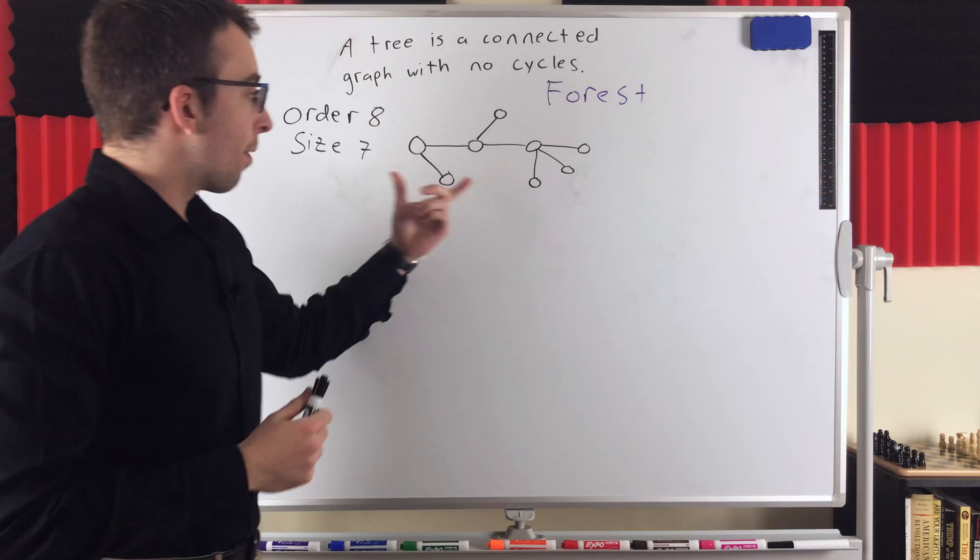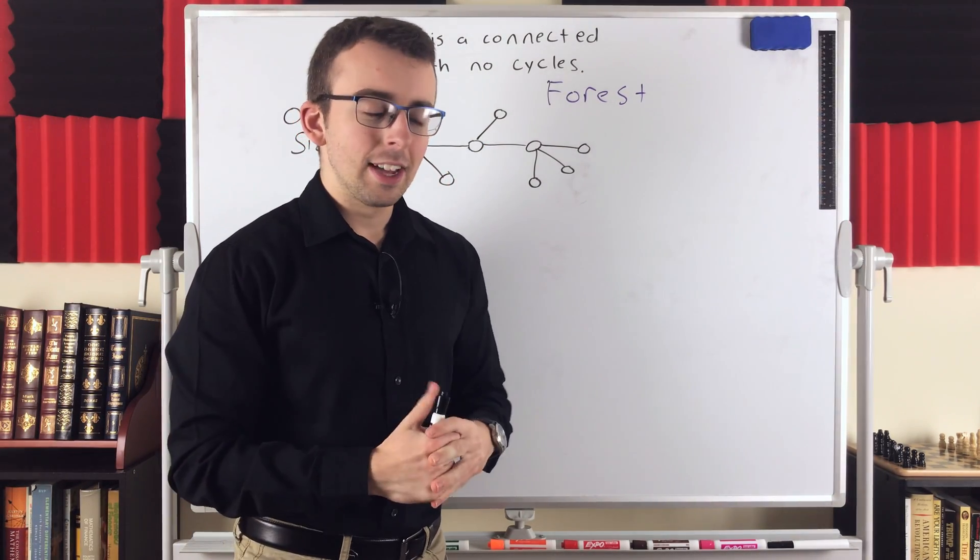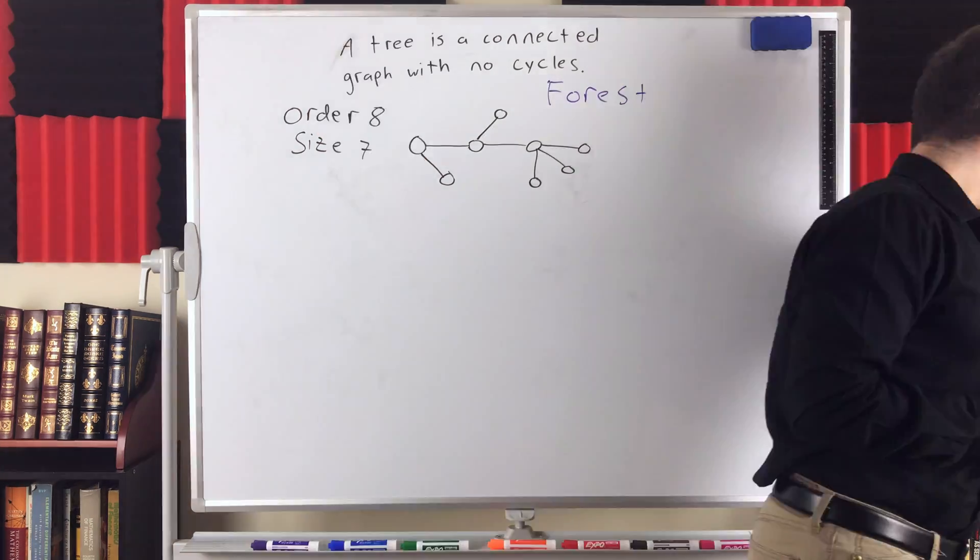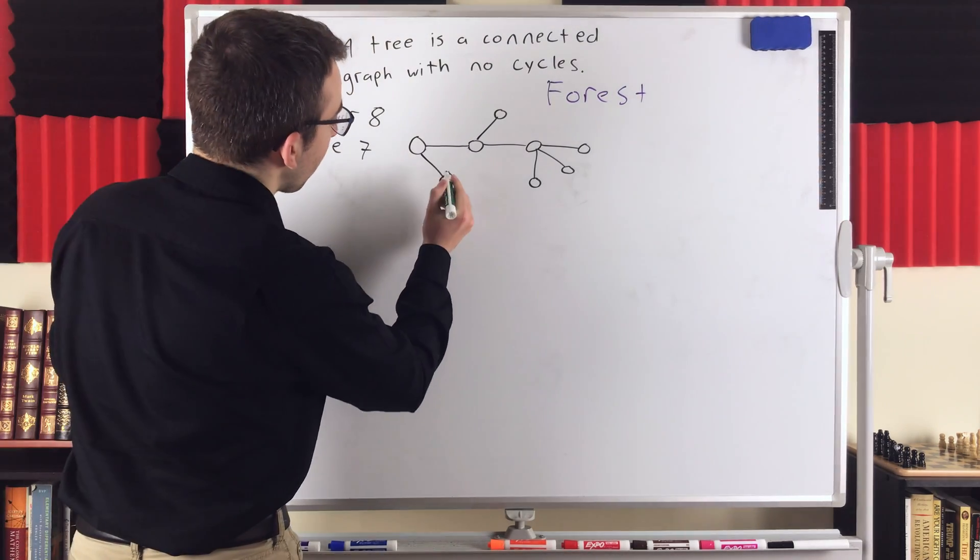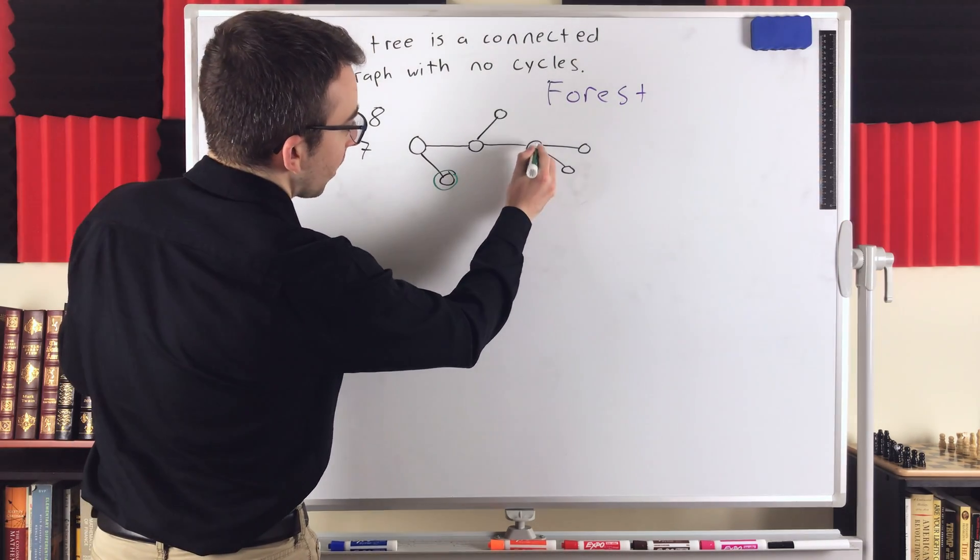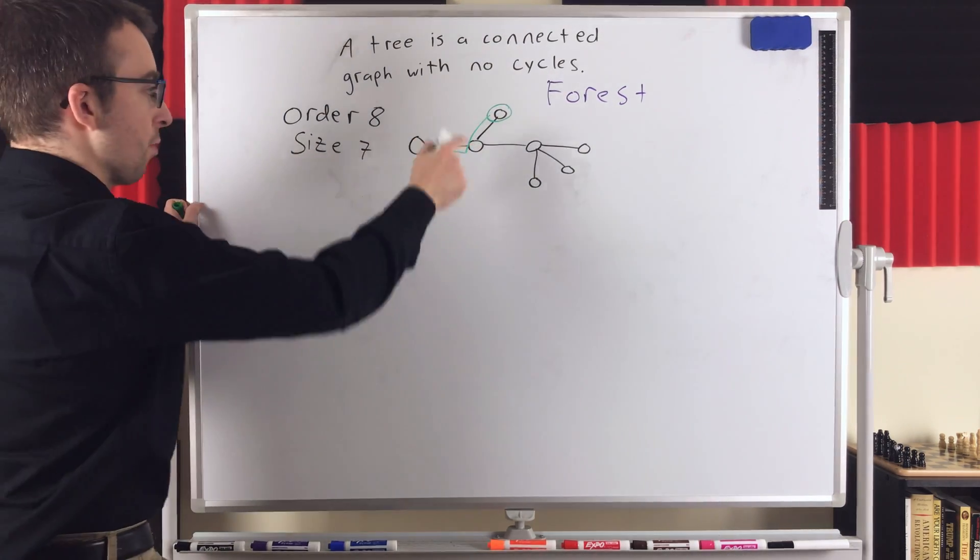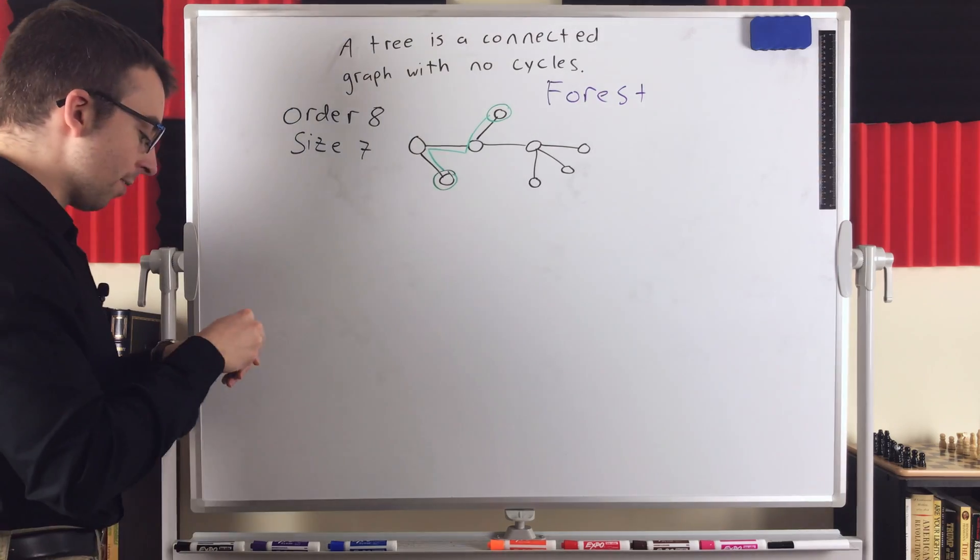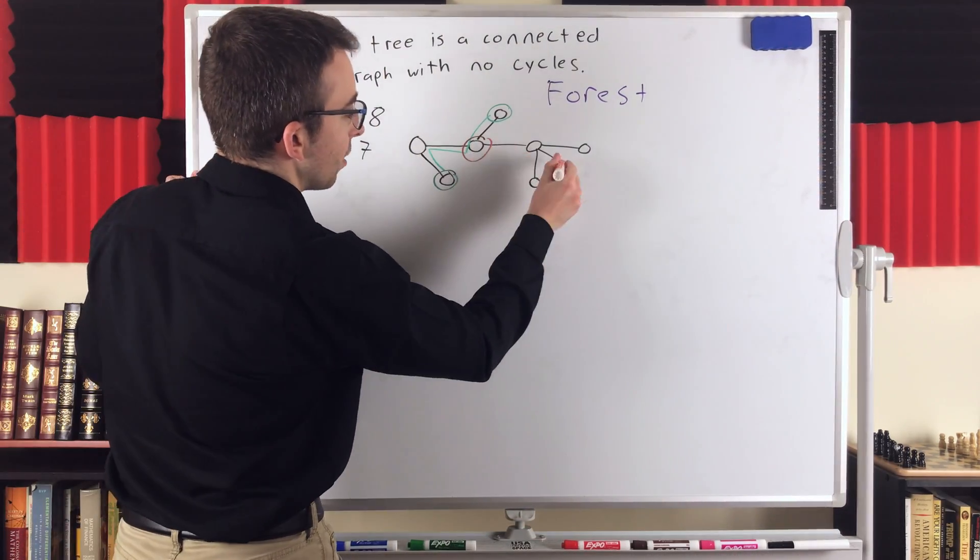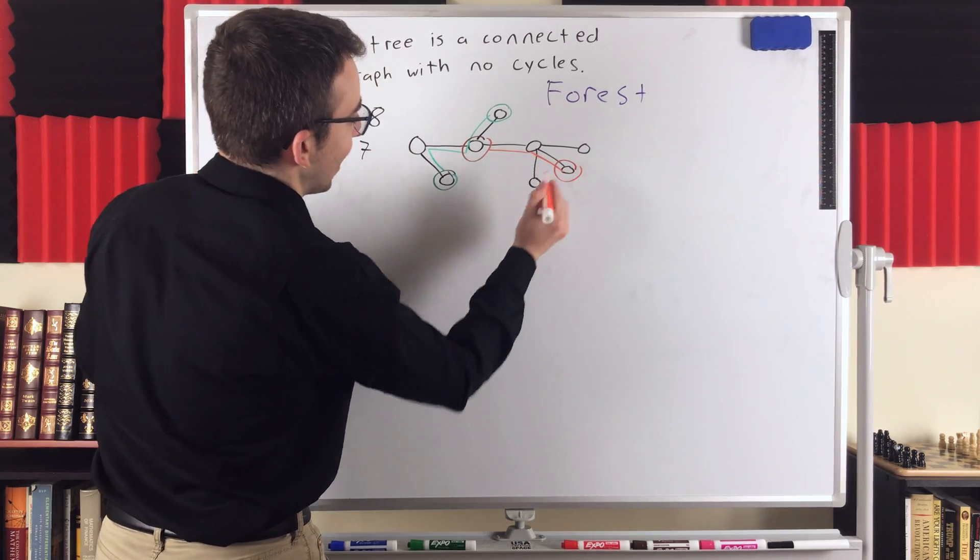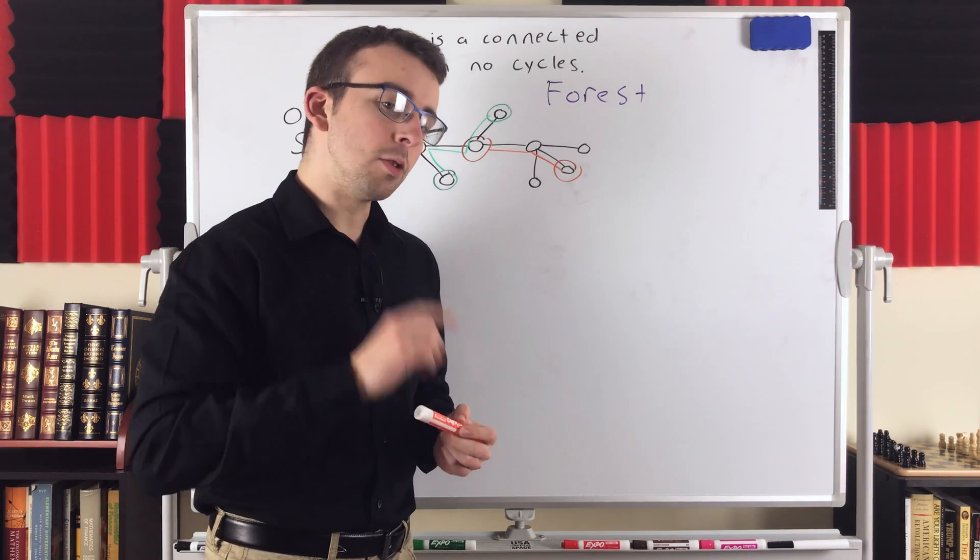is that every two vertices in a tree are connected by exactly one unique path. So that's another equivalent definition of a tree. For example, in our tree here, I don't think this green is very good, but oh well. If we look at this vertex and say this vertex, there's only one path connecting those vertices. That's it. There's no other path connecting those two vertices. Another example would be if we look at this vertex and this vertex right here. There's only one path connecting those.